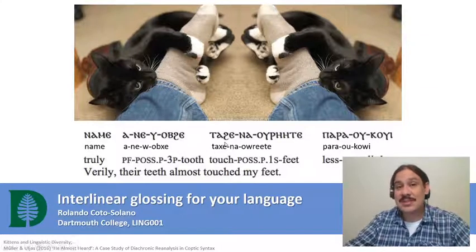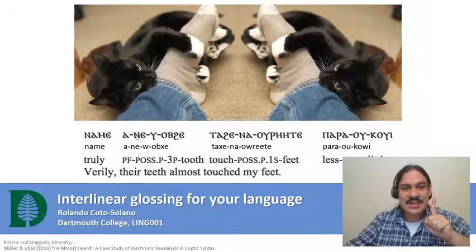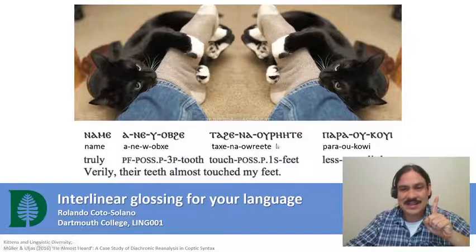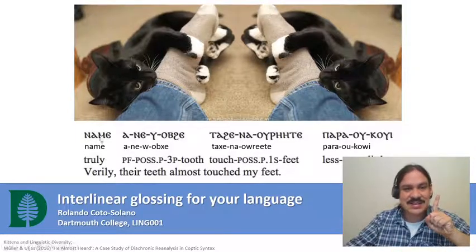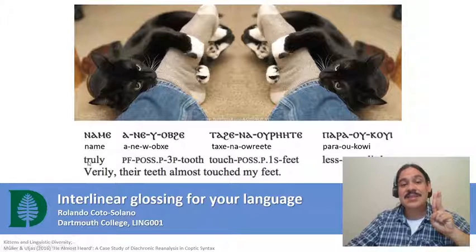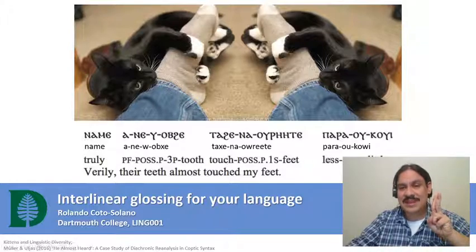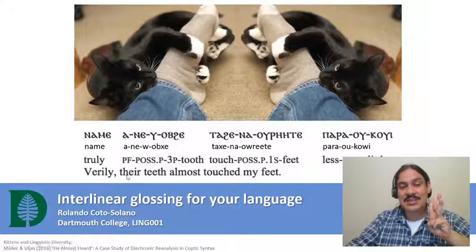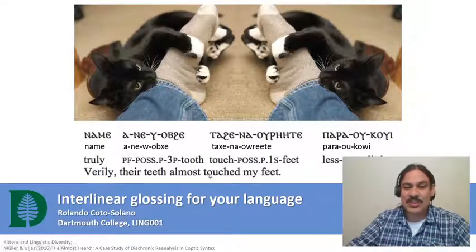In interlinear glossing, you have three elements. First, a description of what the language sounds like. For example, these are words from ancient Coptic. Second, you have a line that tells you the meaning of each of the morphemes in the words. And third, you have a line that tells you the translation of the whole sentence: 'Verily, their teeth almost touched my feet.'